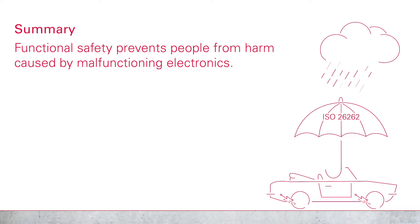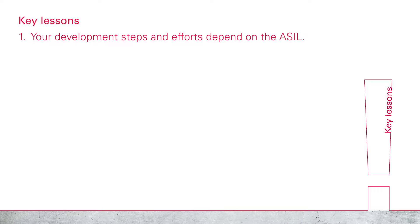That was an overview of ISO 26262. Here is my summary of things you should definitely remember. Functional safety prevents people from harm caused by malfunctioning electronics — that's the reason why this standard exists and why it's relevant for you if you are involved in the development of electronics for vehicles. First, your development steps and efforts depend on the ASIL, whereby the ASIL is the result of a hazard analysis and risk assessment.